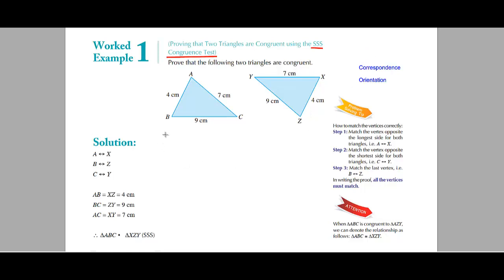The first step is to match the corners of both the triangles. The longest side in the first triangle is 9 cm, and the corner which is opposite to 9 is A. In the second triangle the longest side is again 9 cm and the corner which is opposite to this is X. Therefore, A matches with X, as also mentioned in the solution.